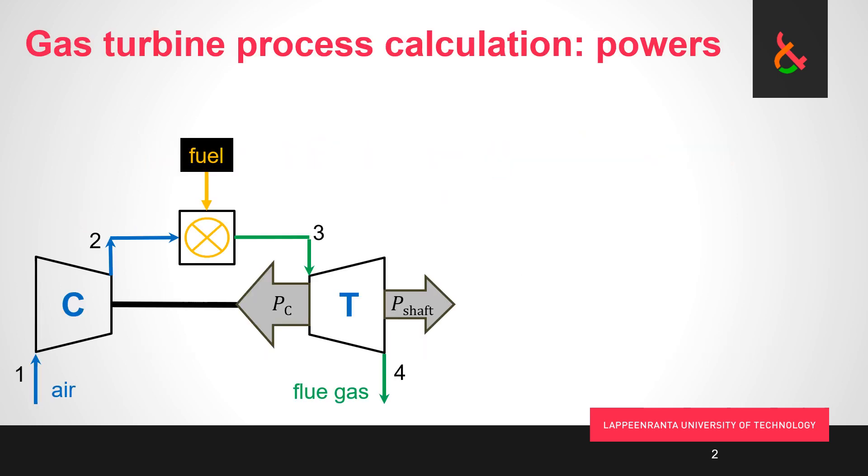If we look at the process, this is what a simple cycle open gas turbine looks like. We have the compressor sucking in the air, compressing to a higher pressure. Temperature increases significantly at the process. We send it to the combustion chamber where we inject fuel, we have combustion, we have very high temperature coming out.